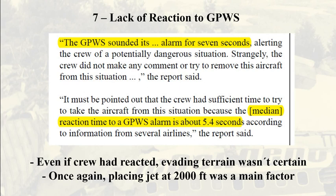According to several former Boeing 707 captains contacted on this matter, even if the crew had reacted, given factors such as the jet's handling characteristics, its proximity to the obstacle, human performance limitations and others, it is uncertain whether they would have saved the jet even had they attempted an evasion maneuver. This leads once again to the fact that by descending to 2,000 feet, the jet was placed in a dangerous situation, which ultimately led to the accident.